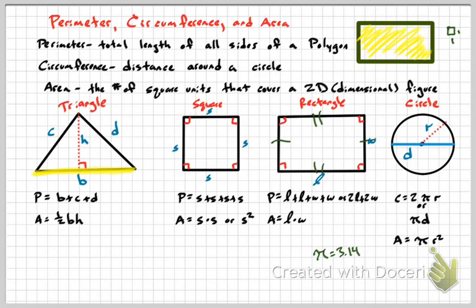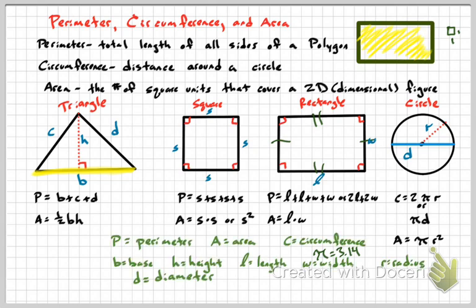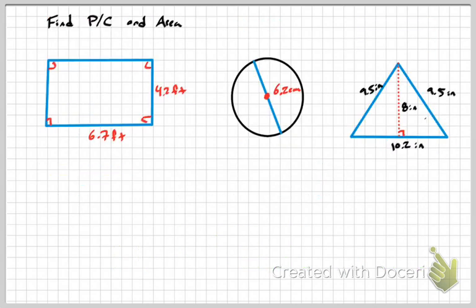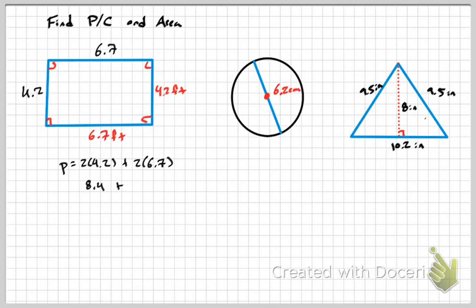Let's work through some examples. For a rectangle with dimensions 6.7 and 4.2 feet: the perimeter is 2(4.2) + 2(6.7) = 8.4 + 13.4 = 21.8 feet. The area is 6.7 × 4.2 = 28.14 square feet.